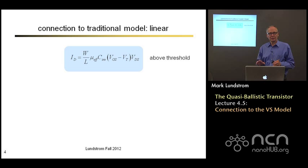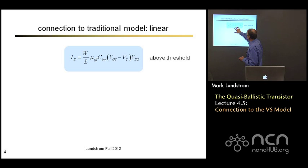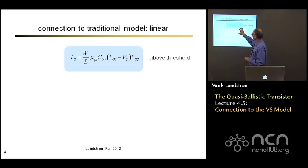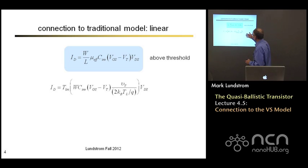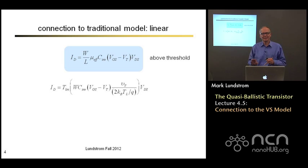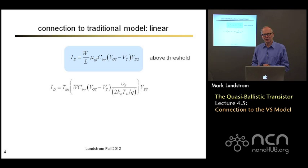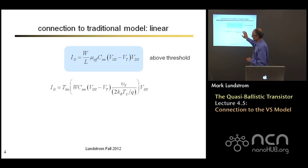Let's look first at low drain-to-source bias in the linear regime. We're above threshold, so I'll use the simple expression for inversion layer charge, and we get this simple traditional expression for the linear region drain current. We also have an expression in our scattering model for the linear region drain current — it looks much different. I'm doing it with Maxwell-Boltzmann statistics just to keep the math simple.